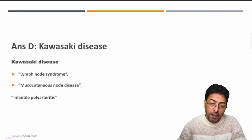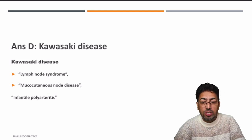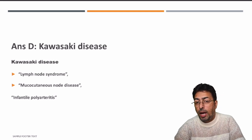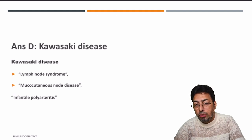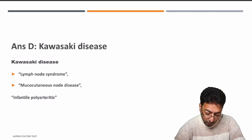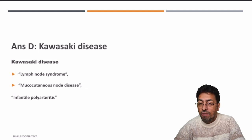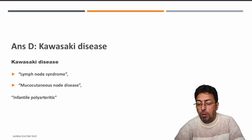The answer is Kawasaki's disease. As far as your knowledge of vasculitides is concerned, there are multiple types and Kawasaki's disease is given multiple names: the lymph node disease, the mucocutaneous lymph node syndrome, or infantile polyarteritis. You have to remember each name because sometimes questions are asked using these alternative names as well.